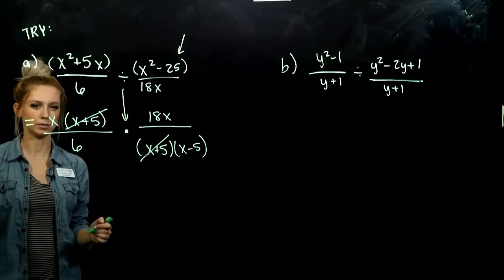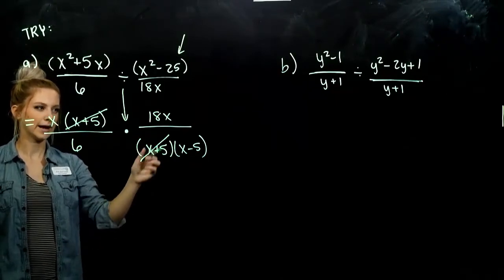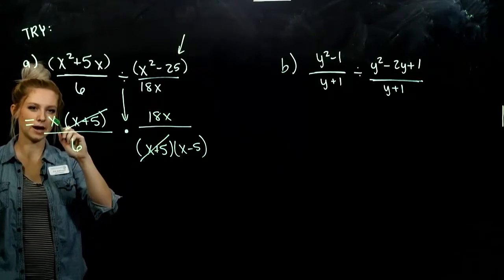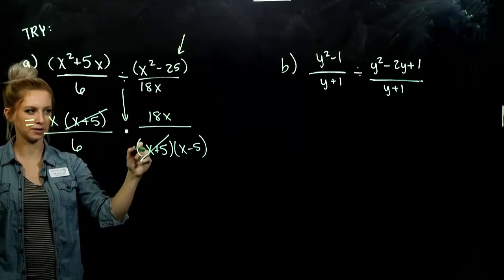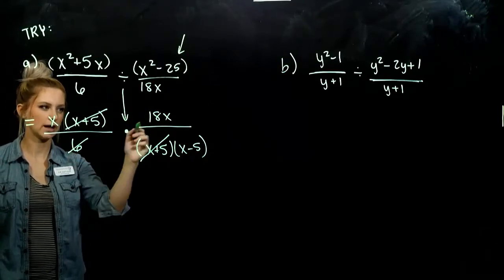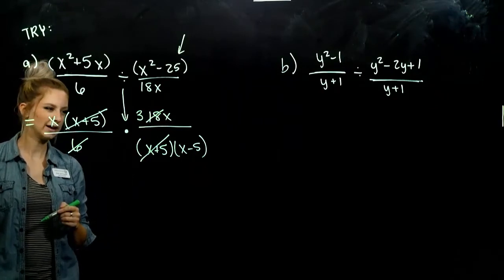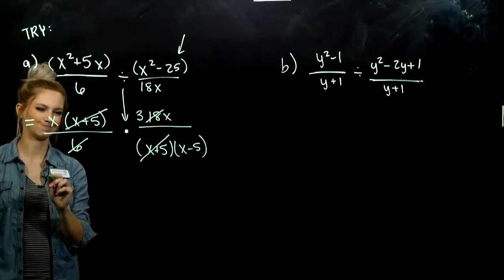So what's common? x plus 5 over x plus 5. That'll be gone. And I have x and x in the top. We can't cancel those because it needs to be on top of each other or diagonal. But what else? 6 goes into 18 three times. Is there anything else that we can simplify? Nope.